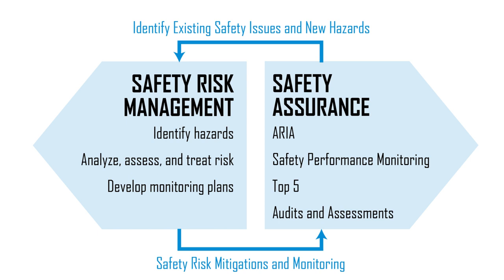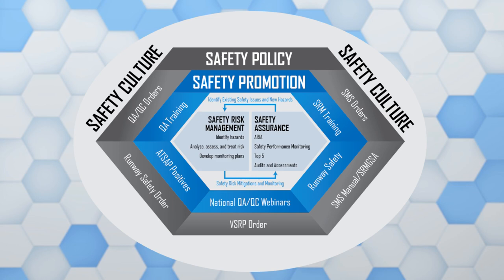SRM complements safety assurance through a closed-loop system. Identifying safety hazards associated with a NAS change and addressing those hazards via SRM makes it possible to proactively detect sequences of events where system deficiencies could lead to an incident or accident before it actually occurs. Safety assurance includes monitoring operational data, analyzing the system, and reporting safety issues. SRM and safety assurance would not be effective in managing NAS safety if they worked in isolation.